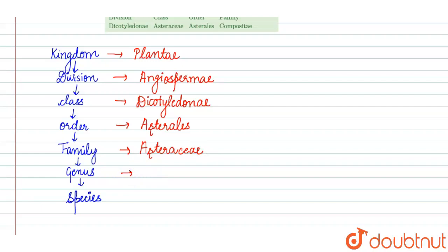Then the genus is Helianthus and the species is Annuus. So this is the taxonomic classification of sunflower.